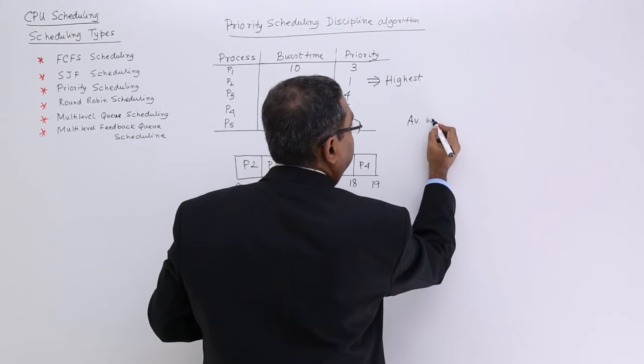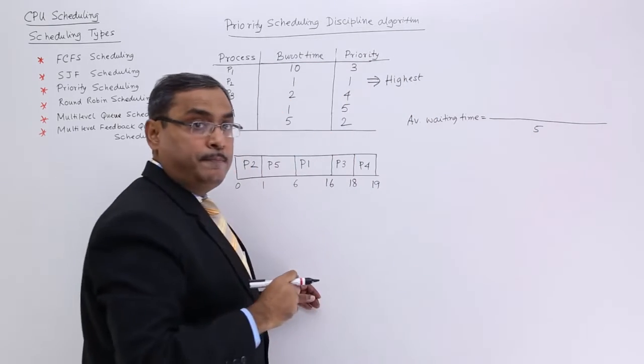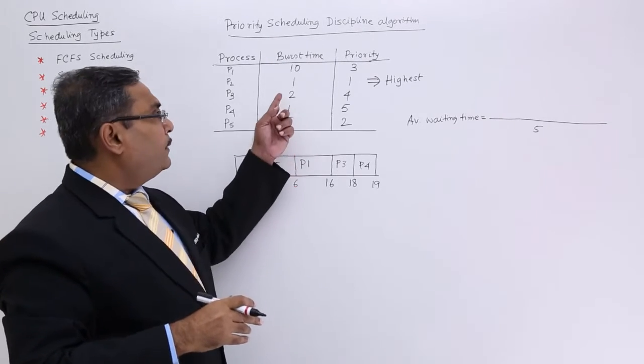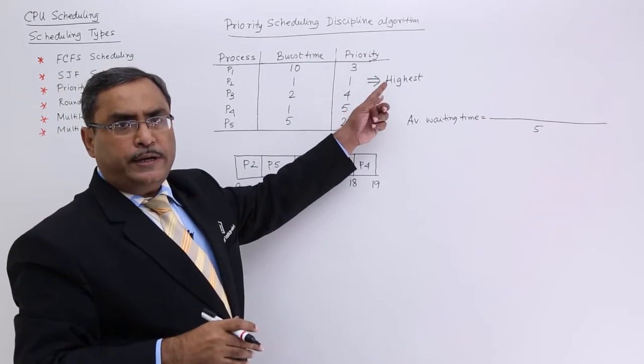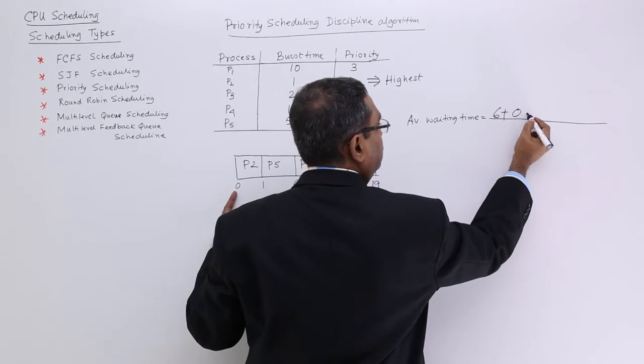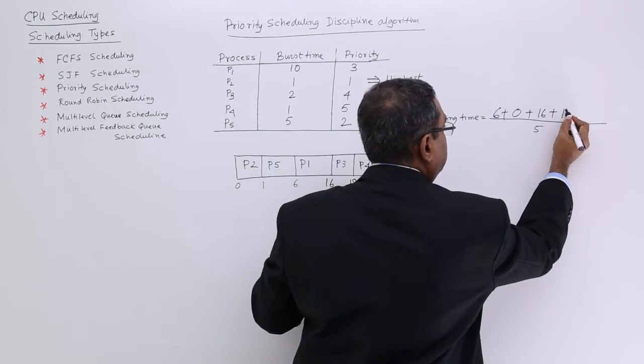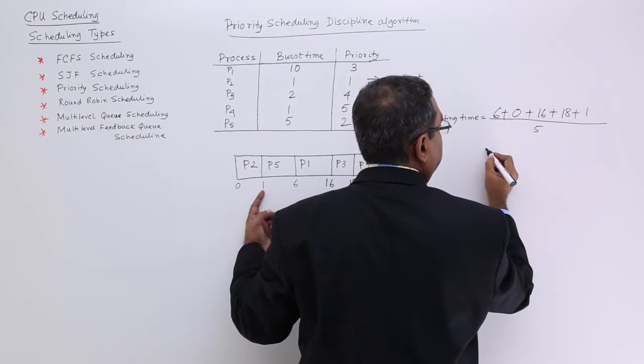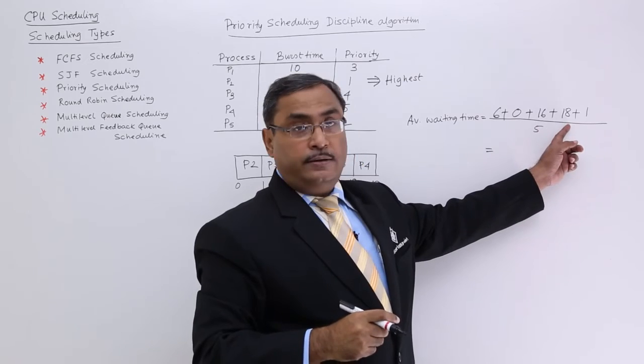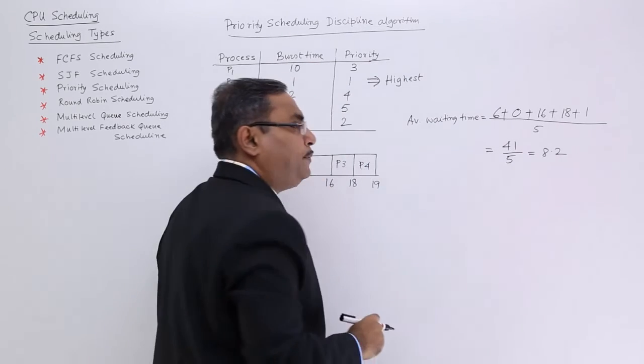So, let me go for the average waiting time calculation. I shall add and I shall divide by 5. I told you that always go for P1, P2, P3, P4, P5 in this sequence. P1 is having the waiting time of 6. All the processes have arrived at the same time because I do not have any separate column for arrival time. So, P1 will be 6, for P2 it will be 0, for P3 it will be 16, for P4 it will be 18, for P5 it will be 1. So, let me go on adding. So, that is 6 plus 16, 22 plus 18 that is 40 plus 1. So, 41 by 5 is 8.2 will be the answer.